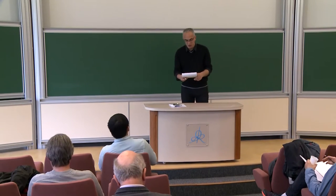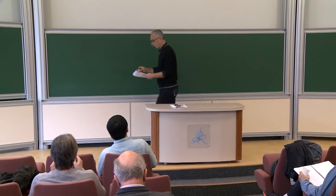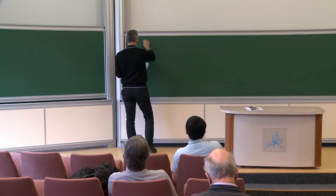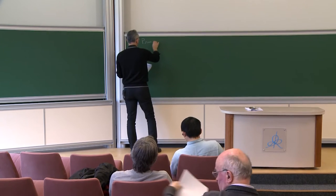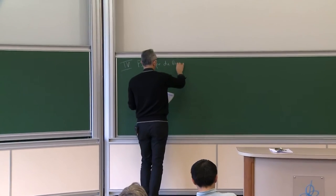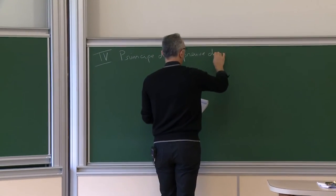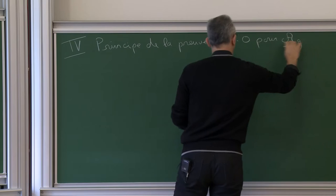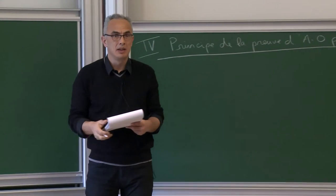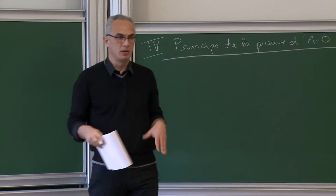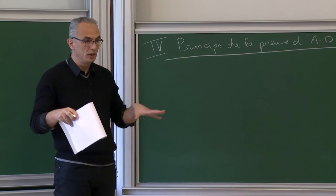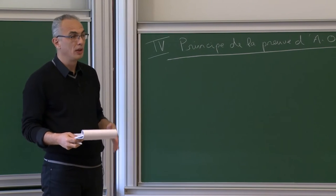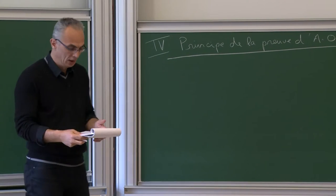Je vais commencer. J'en suis à mon chapitre 4, la section 4, et on va essayer de donner le principe de la preuve d'André-Oort pour A_g. J'ai presque tous les éléments mis en place. Il en manque un qui est central et crucial, qui fera l'objet du dernier cours : les bornes inférieures pour la taille des orbites sous-galois des points CM.